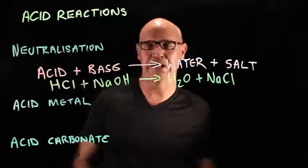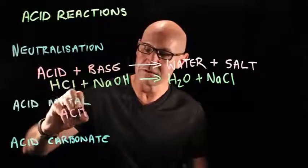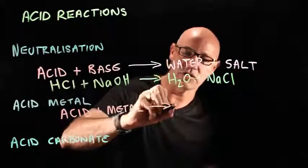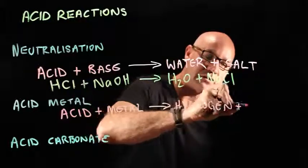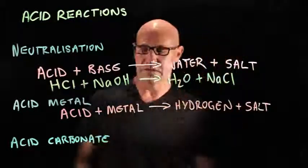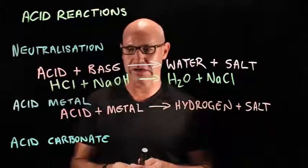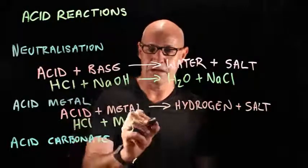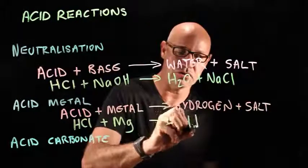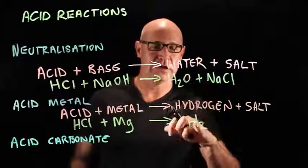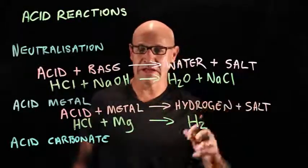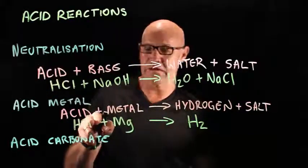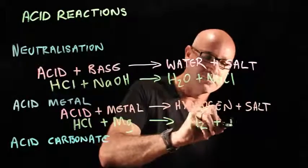The next type is acid plus a metal. When we put together an acid plus a metal, we get hydrogen gas plus a salt. For example, the acid might be hydrochloric acid and the metal might be magnesium. We're going to get H₂ gas, plus we're going to get a salt. Magnesium is our cation and chloride is our anion, so we get magnesium chloride.